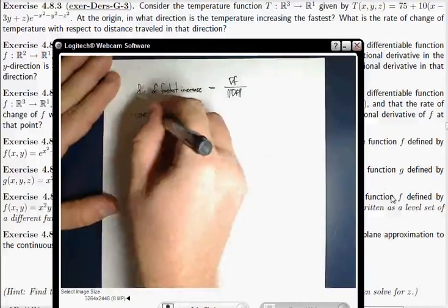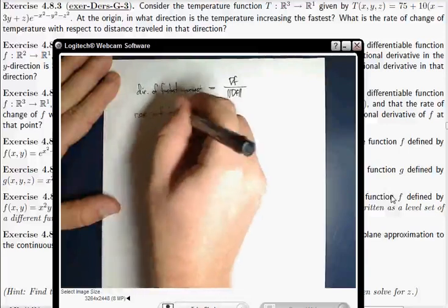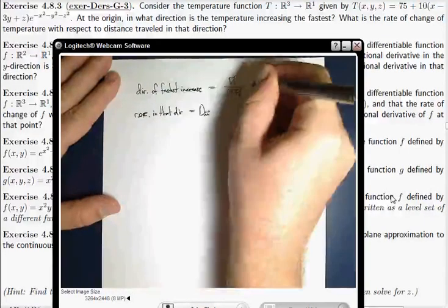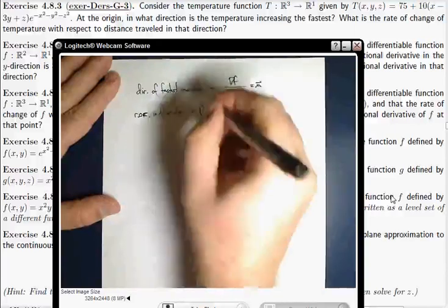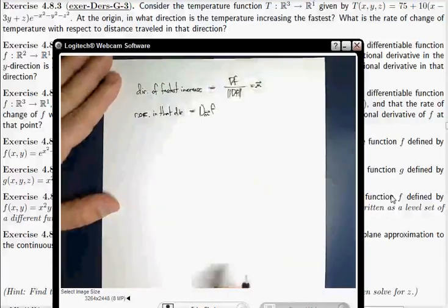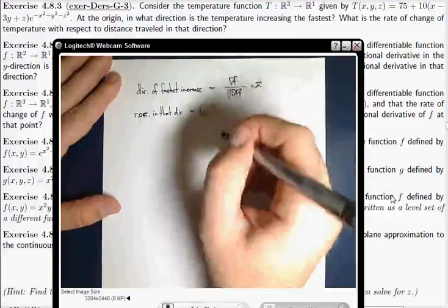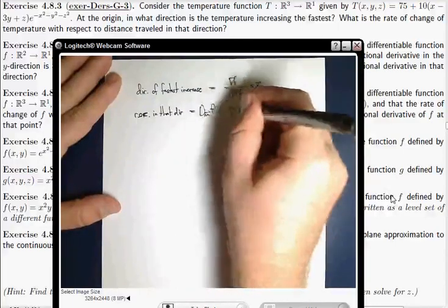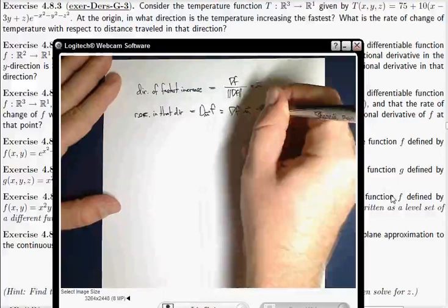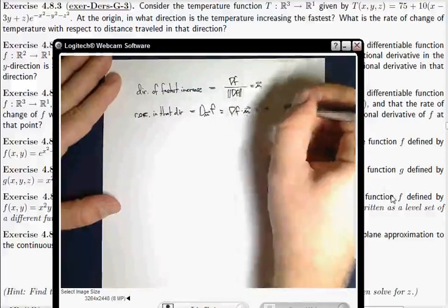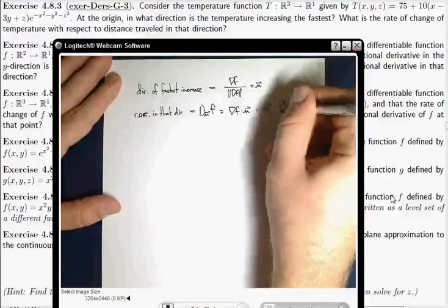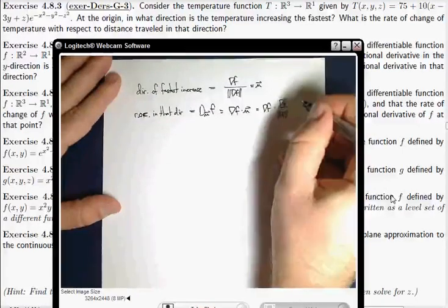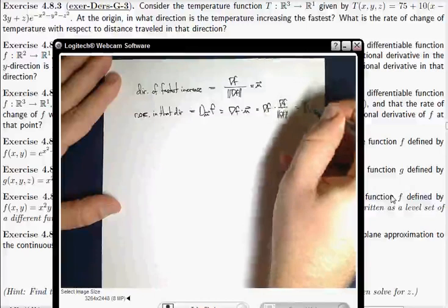So the rate of change in that direction, it's the unit directional derivative, let's call this u. It's the unit directional derivative of the function in that direction, which, there's calculations in the book there, but this is, of course, gradient dot u, which is gradient dot gradient over the length of the gradient, which is length squared divided by length,